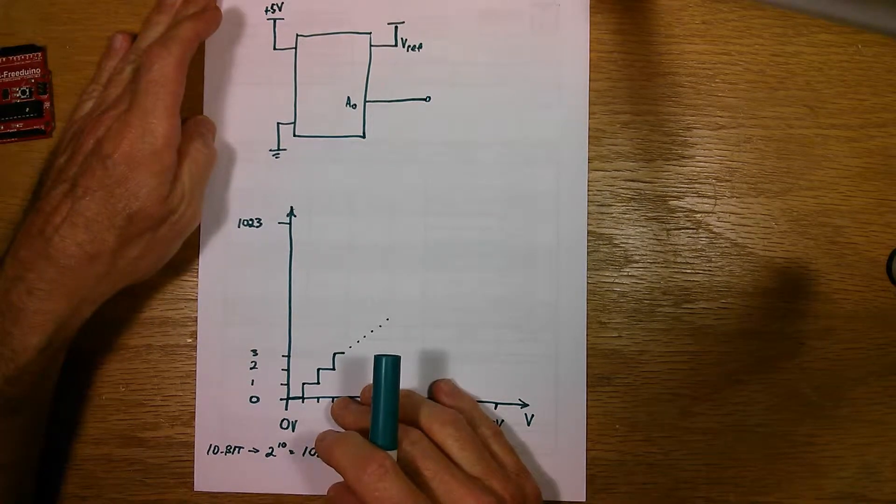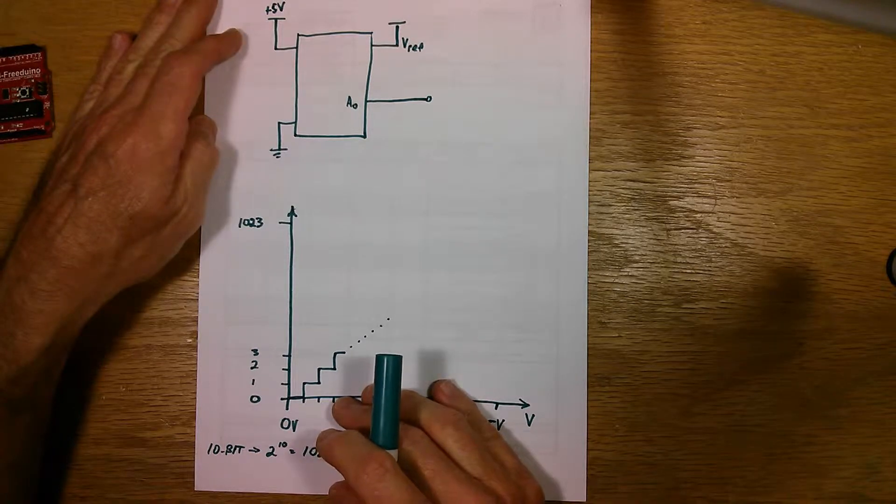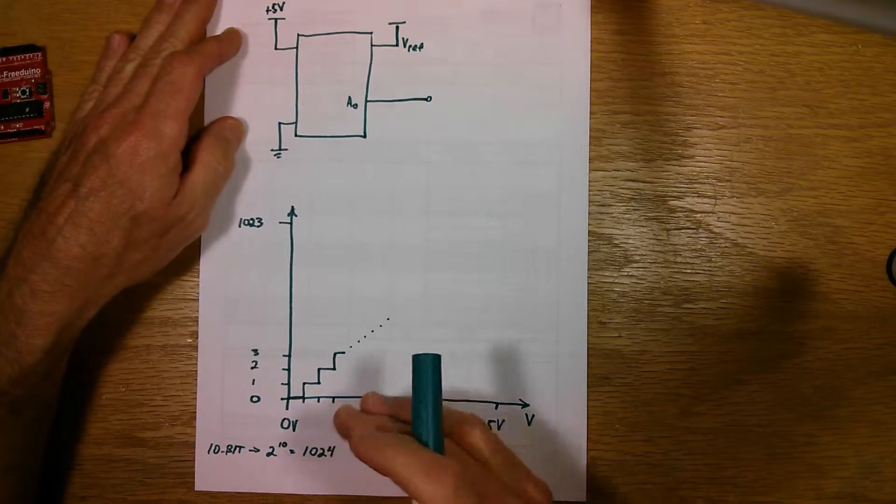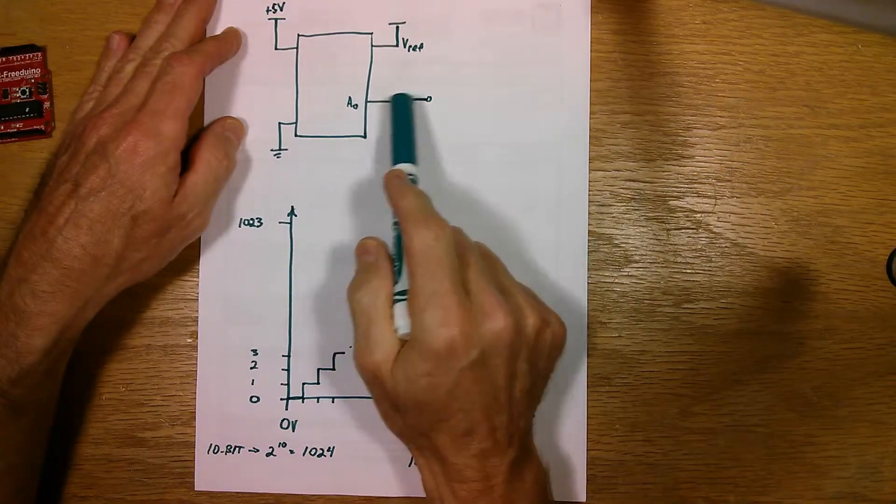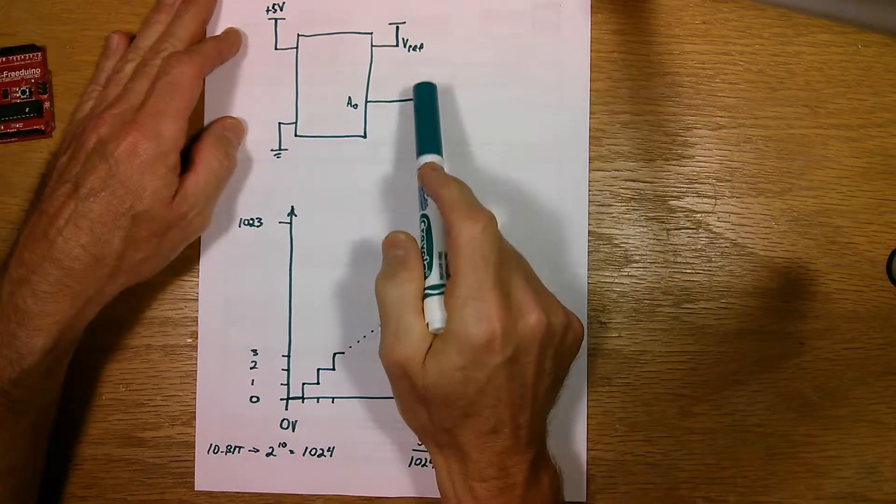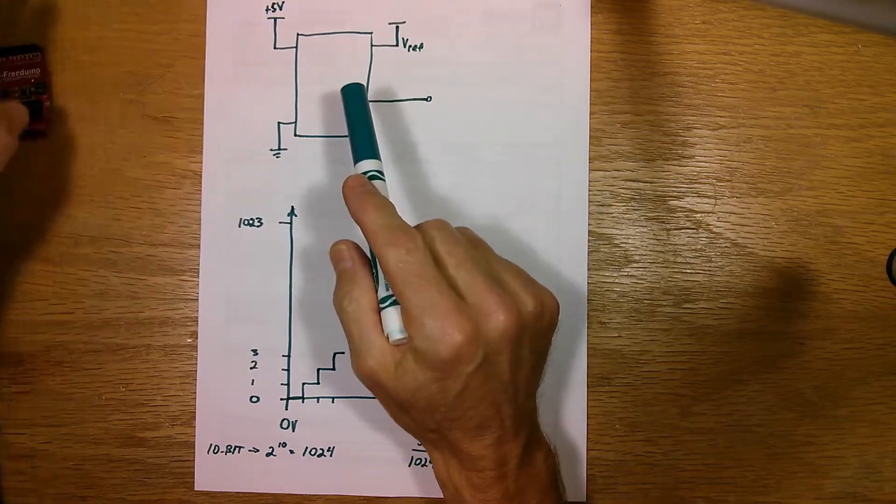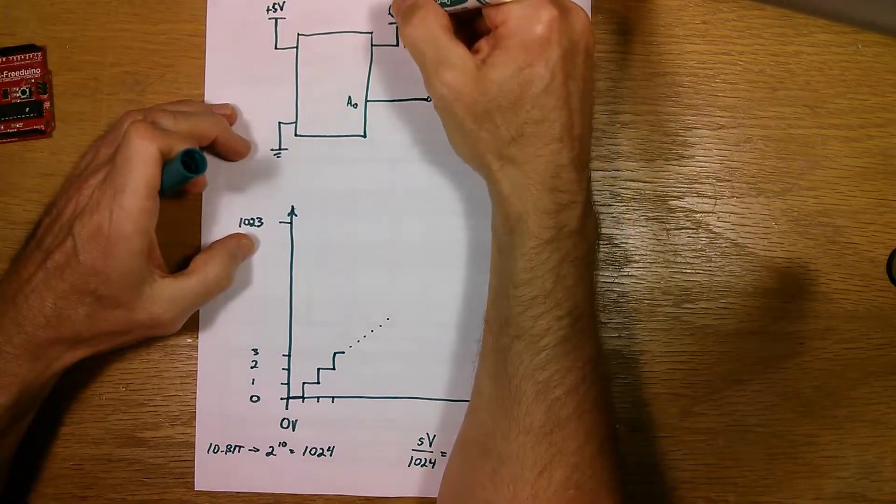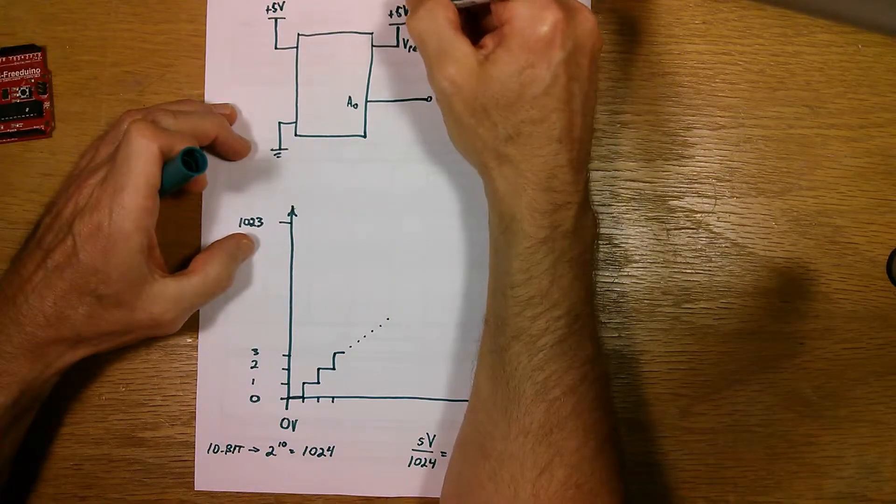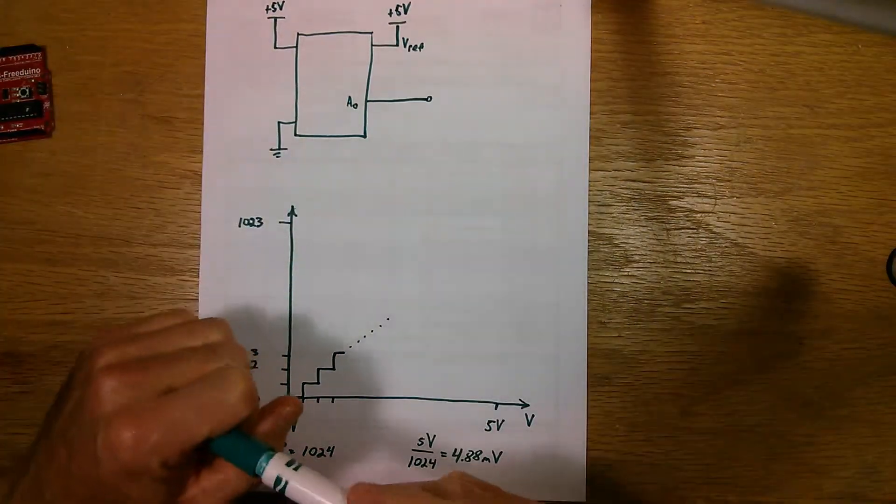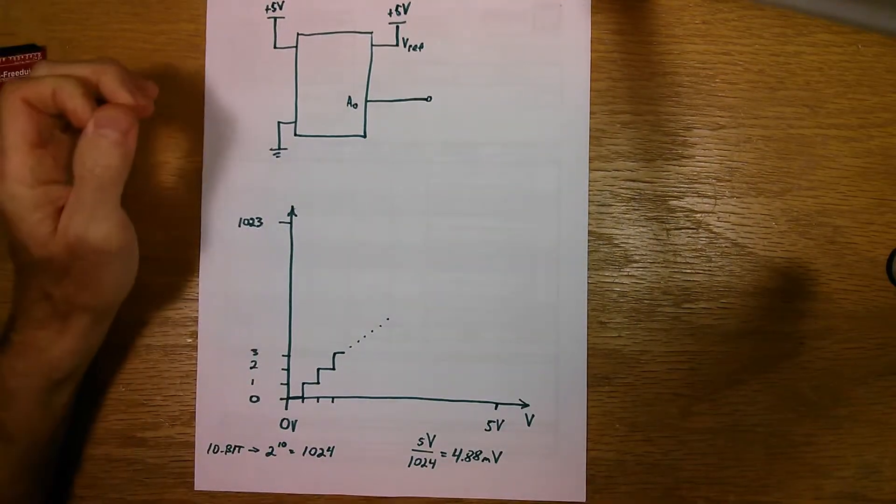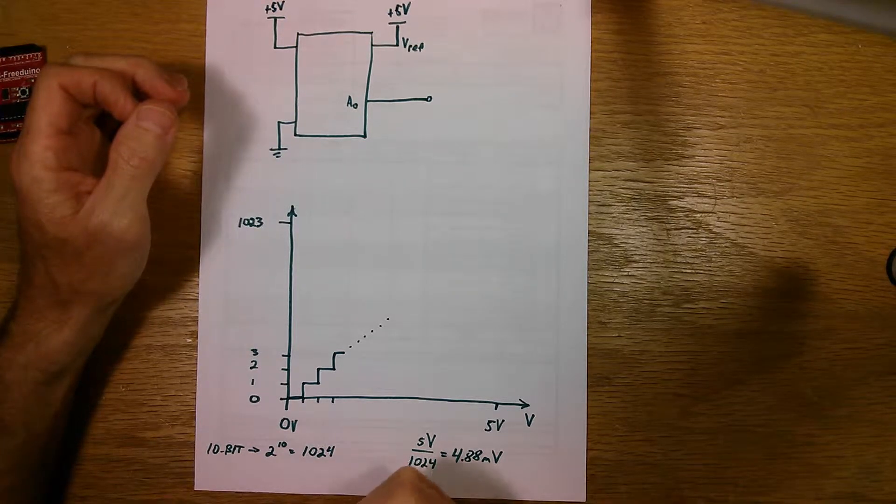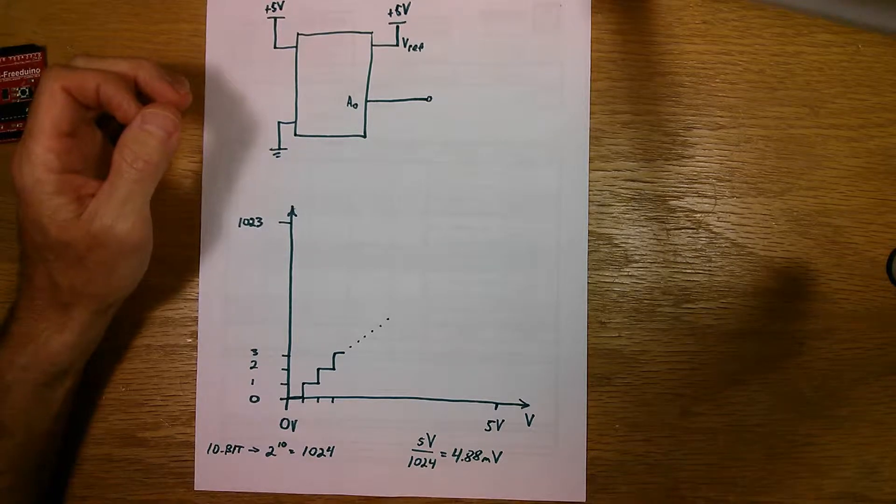And the way an analog to digital converter works is it needs two inputs. It needs the analog input that you're going to convert, you're going to read, and it needs a reference. And in the case of the Arduinos, the V reference, the reference voltage, is actually five volts. It's the same as the power supply voltage. It's not exactly five volts. It varies depending on what the output of the five volt regulator is on the board.